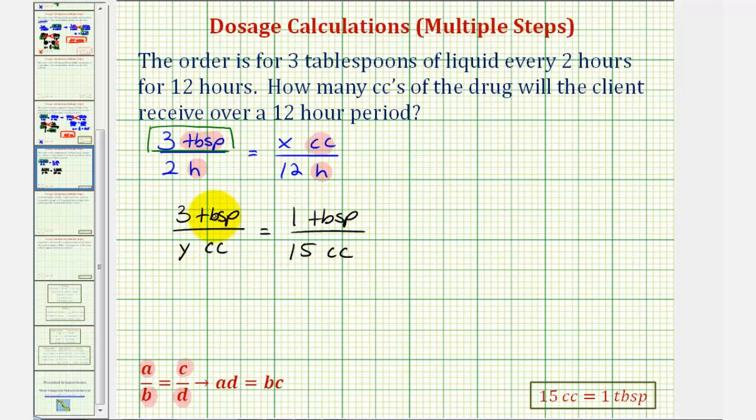Notice in this proportion, the units on the top are the same and the units on the bottom are the same, so now we can cross multiply and solve for y. Cross multiplying, notice that y times one must equal three times fifteen. Well, y times one is y, three times fifteen is forty-five. Since y equals forty-five, that means three tablespoons is equivalent to forty-five cc's.